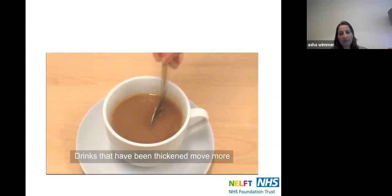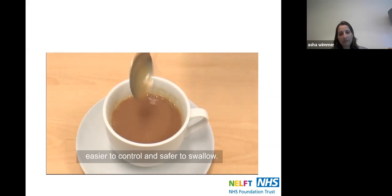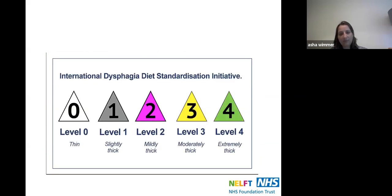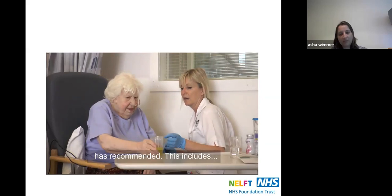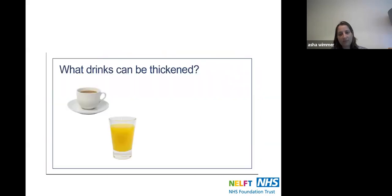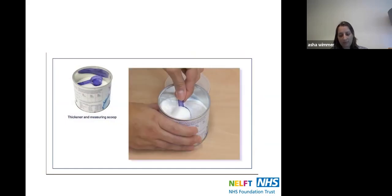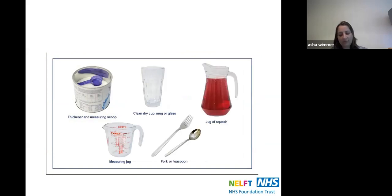Drinks that have been thickened move more slowly in the mouth and throat, so for some people thickened drinks can be easier to control and safer to swallow. In the UK, the categories used to describe the thickness of drinks are known as the International Dysphagia Diet Standardisation Initiative. We now use five levels to describe thickness of drinks. All your drinks need to be the consistency your speech and language therapist has recommended — this includes hot, cold, fizzy, and alcoholic drinks, as well as milk and cereal. To thicken drinks you will need a tin of thickener with a measuring scoop, a measuring jug, a clean dry cup or glass, a fork or teaspoon, and the drink to thicken.